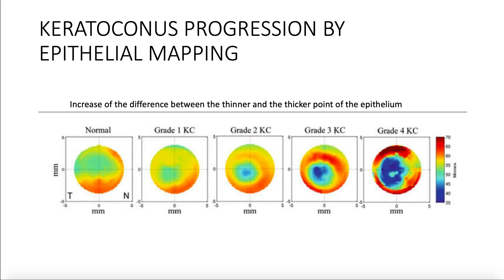Another use of epithelium mapping is to monitor the evolution and progression of keratoconus. We look at the difference between the thinnest point and the thickest point of the epithelium. When this difference becomes greater, it means the keratoconus is progressing. I call this the epithelial delta — the difference between the thinnest and thickest points of the epithelium. When this delta increases over time, it indicates keratoconus progression.